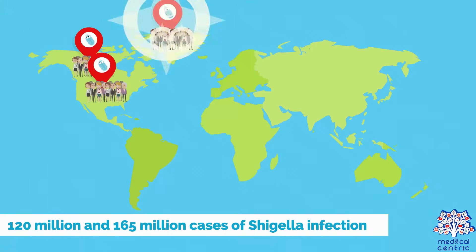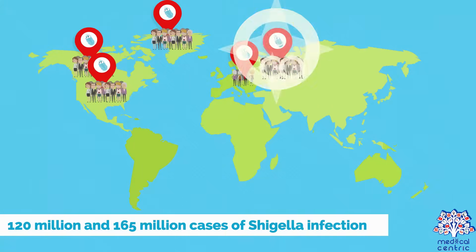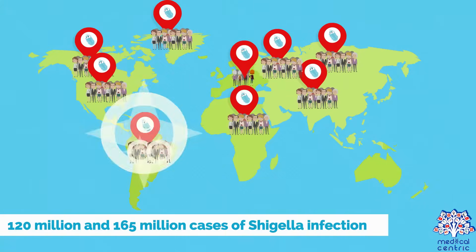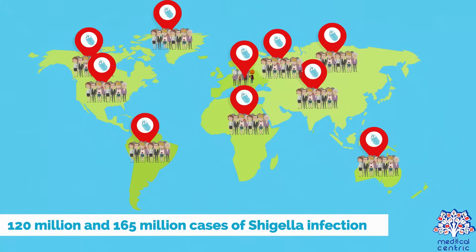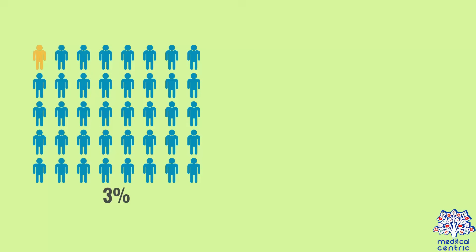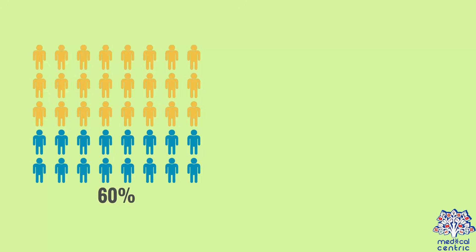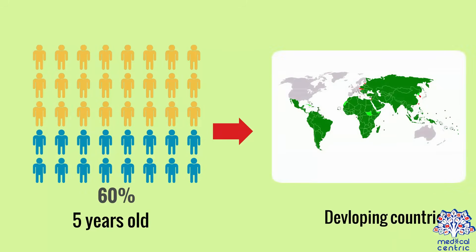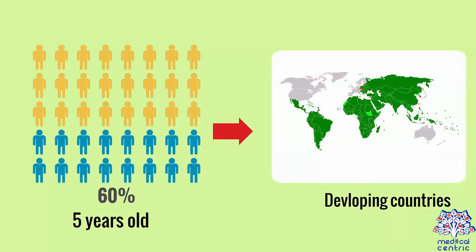Each year worldwide, there are between 120 million and 165 million cases of Shigella infection, of which 1 million are fatal. Over 60% of these fatalities are children under 5 years old in developing countries.